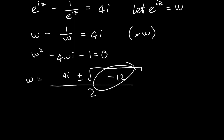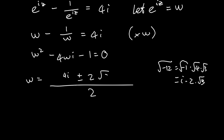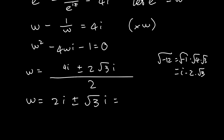Now we can simplify the square root of negative 12. We write it as the square root of negative 1 times the square root of 4 times the square root of 3. The square root of negative 1 is i, the square root of 4 is 2, so that gives 2√3·i. Now dividing each term in the numerator by 2, we get 2i plus or minus √3·i. Taking i out as a common factor, w equals i times (2 plus or minus √3).